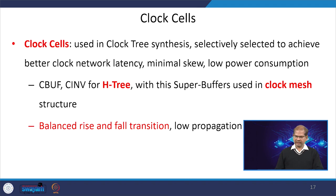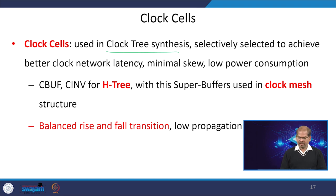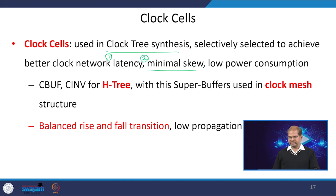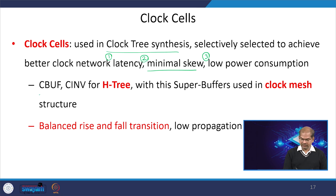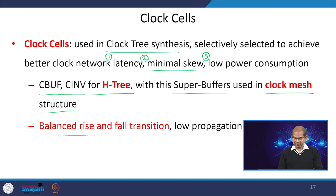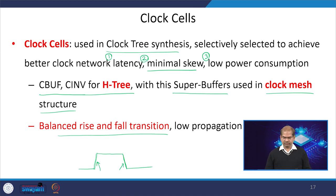Clock cells are very useful during clock tree synthesis. Their goals are: to reduce clock tree latency, to minimize skew between pins, and to reduce power dissipation. There are different types of clock cells such as C-buffer and C-inverter used for H-tree structures, and super buffers used for clock mesh structures. The main goal is to generate balanced rise and fall transitions — the rise and fall transition times of the clock should be as equal as possible — with low propagation delay.